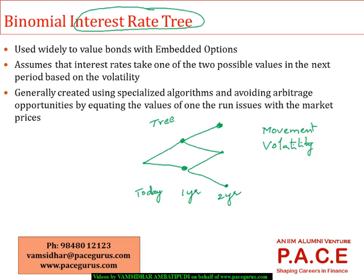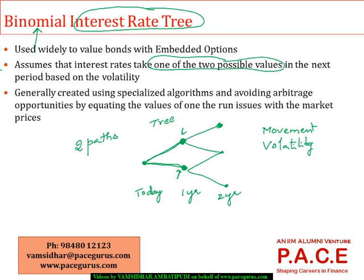In this tree we create two parts from every node. From today, after one year the interest rate can either go up or down — the one-year rate can be either one number or another. Creating only two possible values for the next period is what we call a binomial interest rate tree. We have used a similar mechanism when valuing options on equities using a binomial tree model.